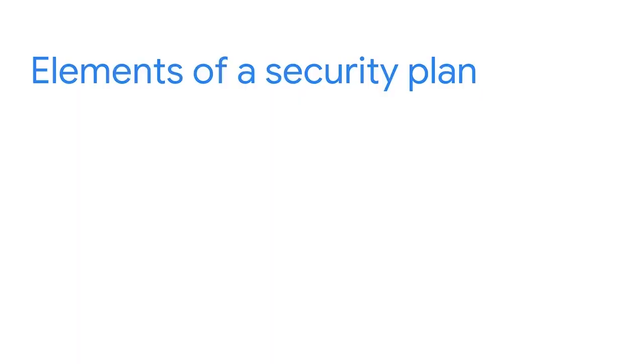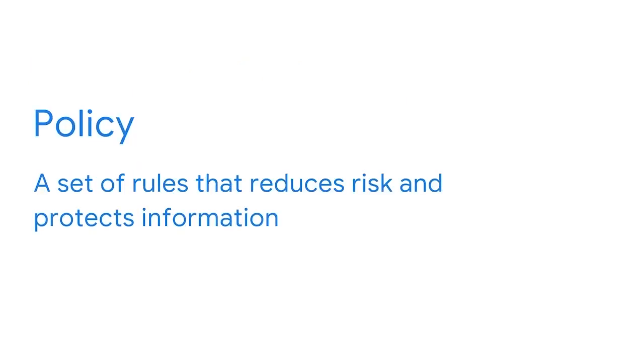Security plans consist of three basic elements: policies, standards, and procedures. A policy in security is a set of rules that reduce risks and protect information. Policies are the foundation of every security plan, giving everyone guidance by addressing questions like: what are we protecting and why? Policies focus on the strategic side of things by identifying the scope, objectives, and limitations of a security plan. For instance, newly hired employees at many companies are required to sign off on an acceptable use policy, or AUP — provisions that outline secure ways an employee may access corporate systems.